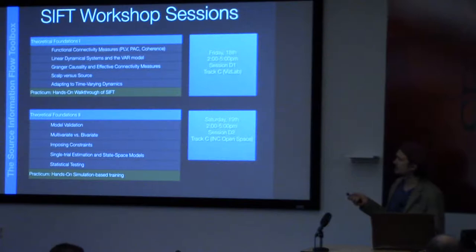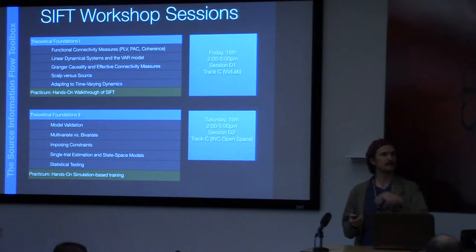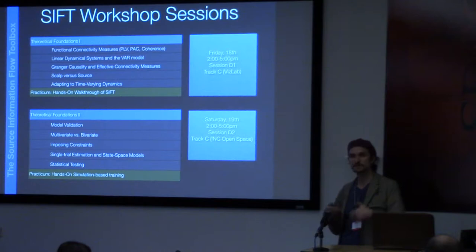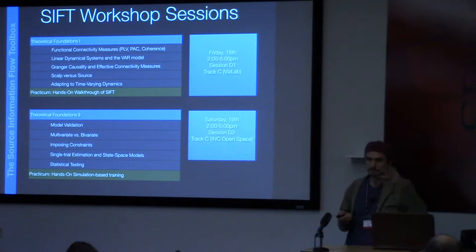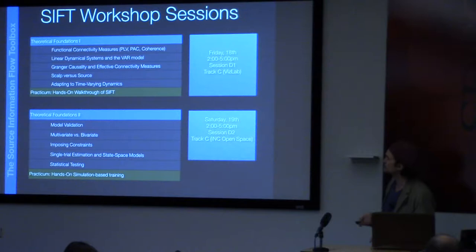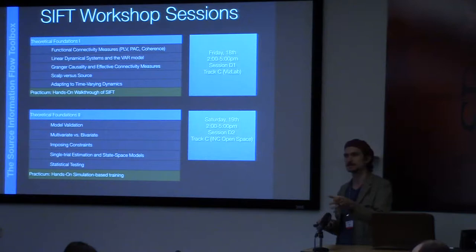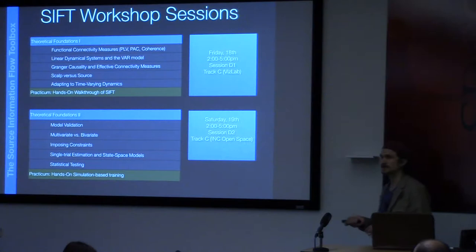We'll cover Granger causality and a range of different effective connectivity measures. By the end of this session, you'll understand the theoretical foundation for Granger causality and causality in general, how it differs from correlation or coherence measures, and why causal models matter. We'll also discuss modeling network dynamics at the sensor versus source level, source modeling approaches, and how to track time-varying dynamics at sub-second timescales.